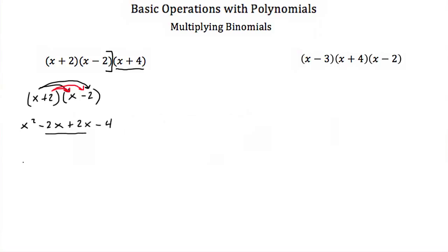I combine my like terms — the negative 2x and positive 2x cancel — and we get x squared minus 4. That's the solution for the multiplication of just these first two binomials.